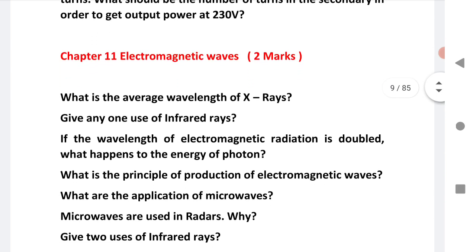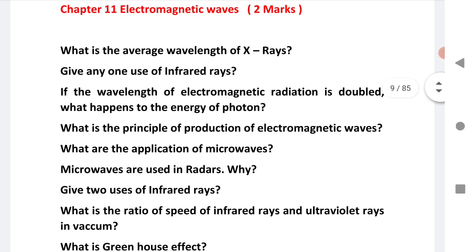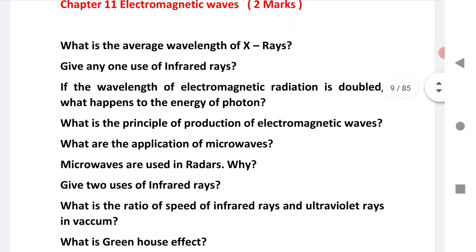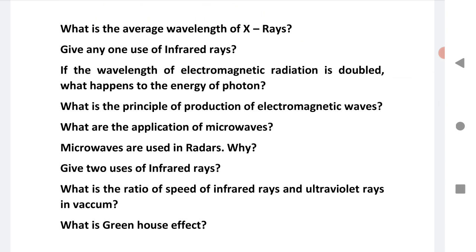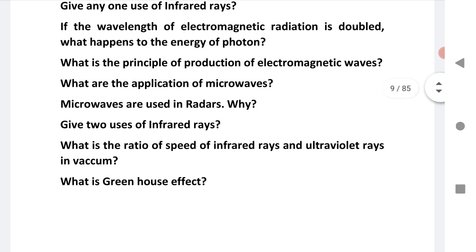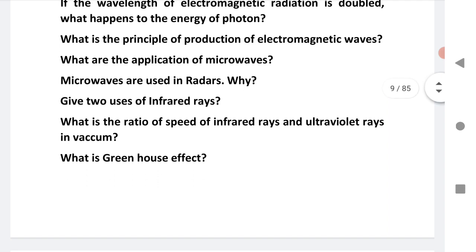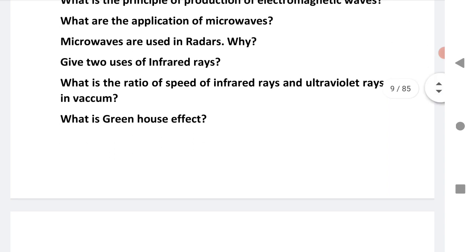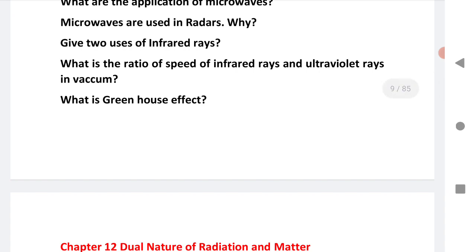Electromagnetic waves, very important chapter for two marks. What is the average wavelength of x-rays or give any one use of infrared? This is a very important question that might come in the exam. If the wavelength of electromagnetic radiation is doubled, what happens to the energy of photons? Next, explain principle of production of electromagnetic waves. Next is applications of microwaves - microwaves are used in radar, why? Give two uses of infrared. Next question is what is the ratio of speed of infrared rays and ultraviolet rays in vacuum? Next and last question of this chapter: what is greenhouse effect?